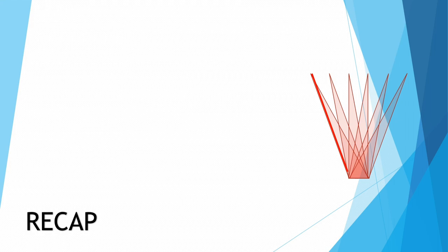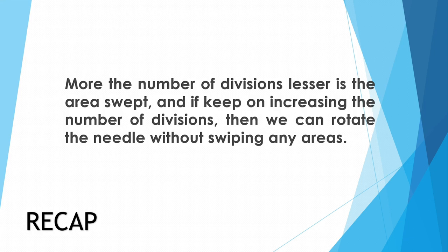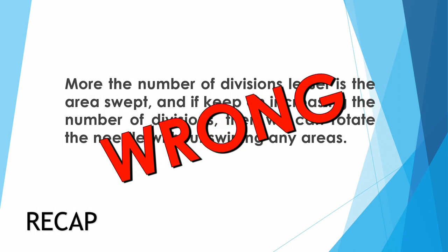And if we keep on increasing the number of divisions, then this area will become lesser and lesser. If we keep increasing the number of divisions and take them to infinity, it will reduce our area to zero. And then we said that it is wrong and asked you to spot the mistake in the video. Now we will discuss that mistake.